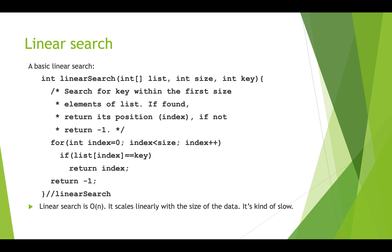Let's first look at linear search. Here's the code for a basic linear search. This is a function that takes in an array of integers, a size integer, and the key — what we're searching for. We have a for loop that goes from zero up to the size of the array, incrementing one by one, and we look at the item at each index to see if it is the same as the key we're searching for.